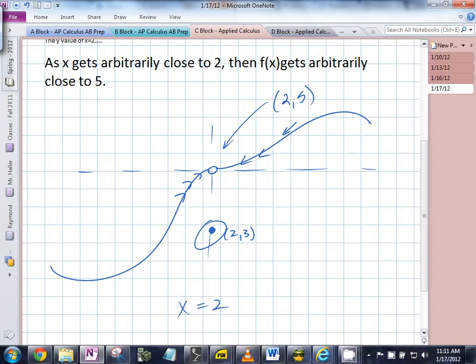It'll come into play later when we talk about different aspects of functions, but in the case of limits, does it matter if it's defined there? No. Can you get arbitrarily close to 5 by getting arbitrarily close to 2? Yes. Therefore, 5 is the limit of f of x as x goes to 2.